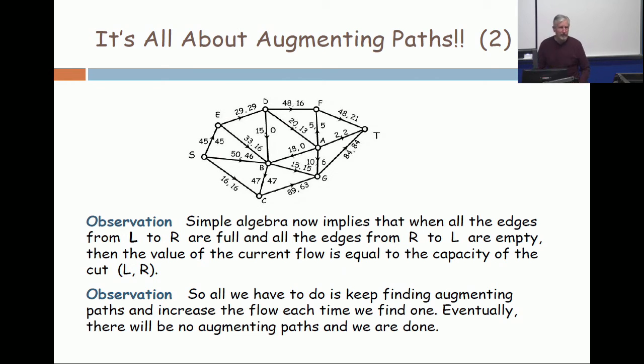And you're done. All right, so now what that means is, all you're going to do is find augmenting paths, and increase the value of the flow, and keep that up iteratively until you can't find any augmenting paths.